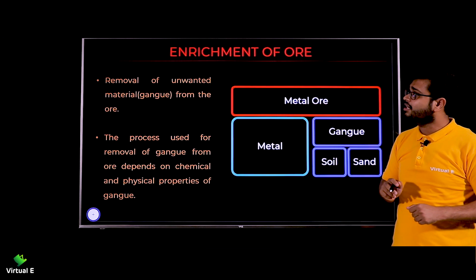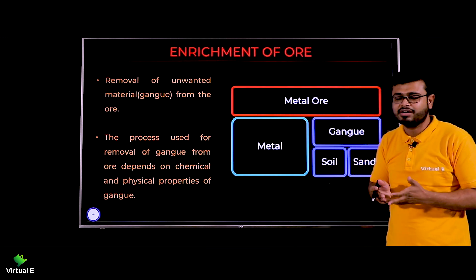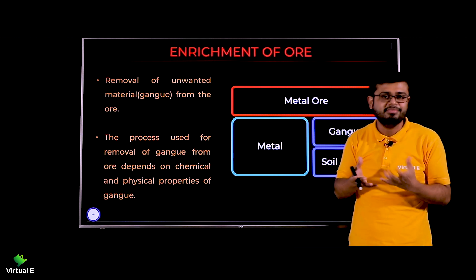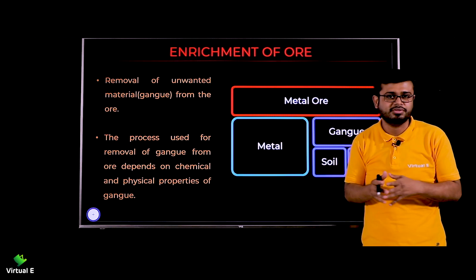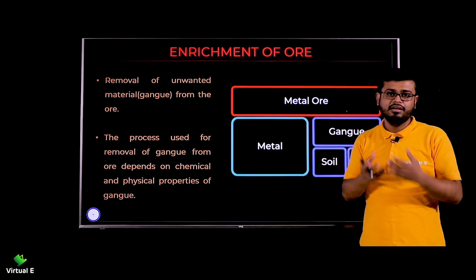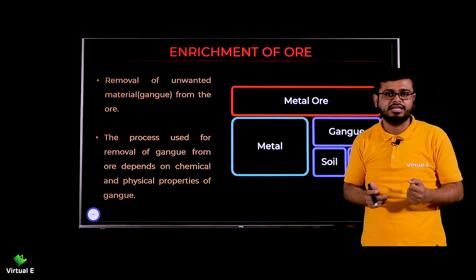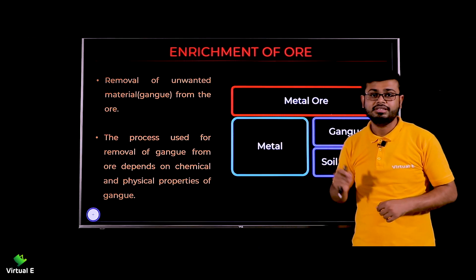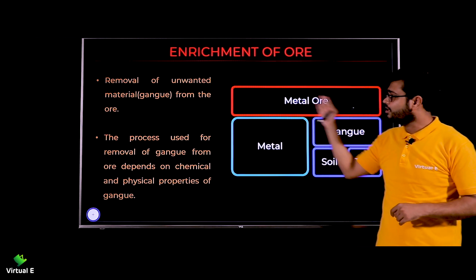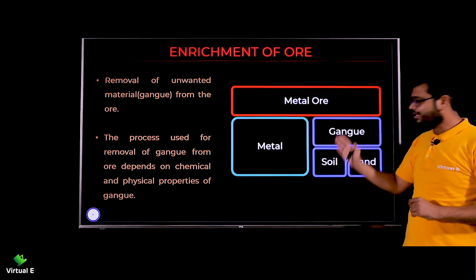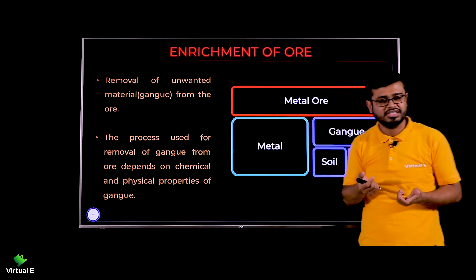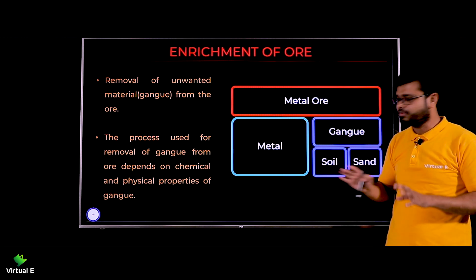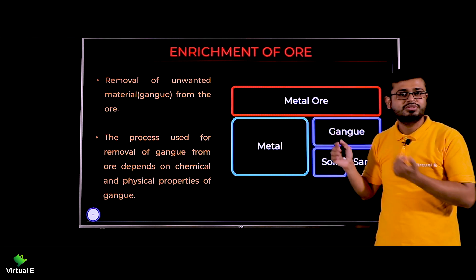Now let's discuss enrichment of the ore. You have a mineral, but you also need to remove impurities from it because when you get minerals from Earth's crust, there are lots of impurities — soil, sand particles, and other materials. None of these can be used in the metal. So you have to remove all unwanted material — called gangue — from the ore. This process is called enrichment of the ore, because we are only interested in the metal, not in useless impurity materials.